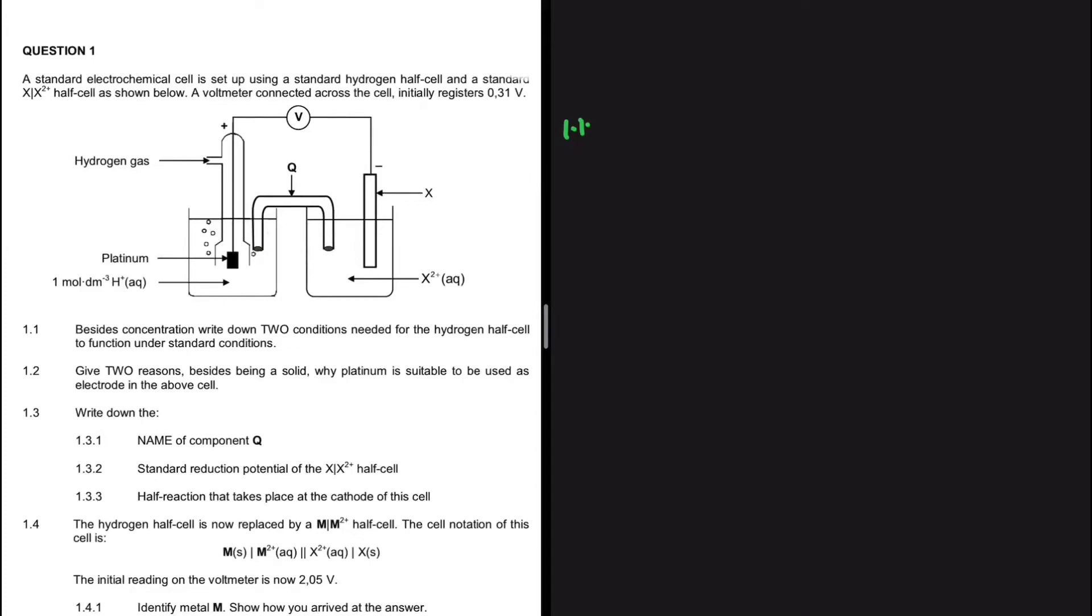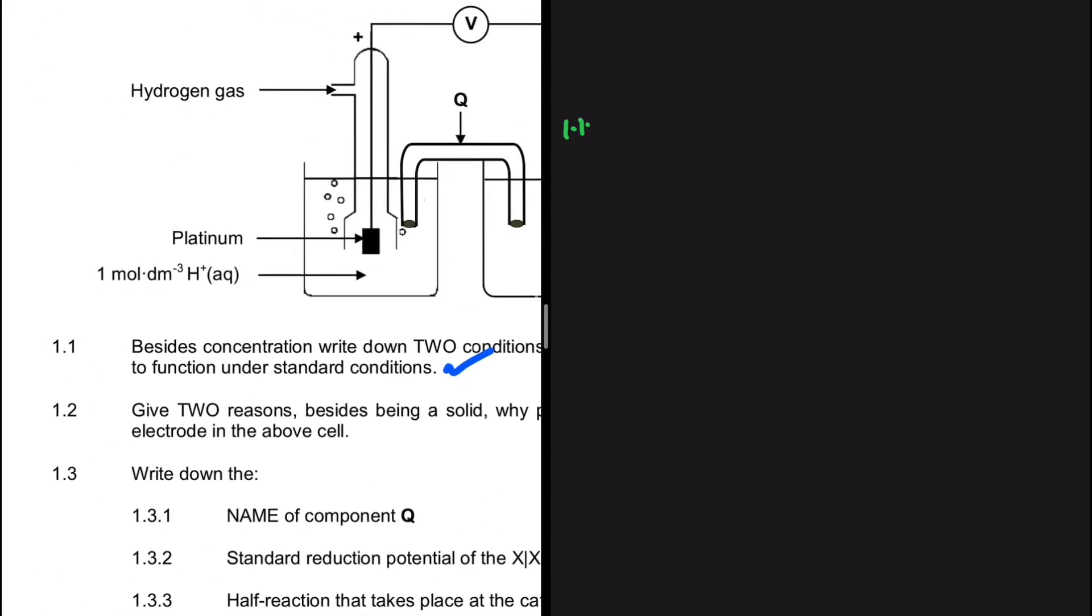Besides concentration, write down two conditions needed for the hydrogen half-cell to function under standard conditions. In total, we have three standard conditions, one being concentration at one mole per decimeter cubed. We're looking for the other two standard conditions, that is pressure.